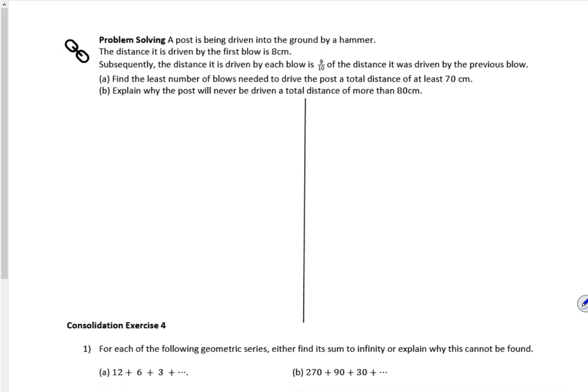So problem solving. A post is being driven into ground by a hammer. The distance it is being driven by the first blow is 8 centimeters. Subsequently the distance it is driven by each blow is 9 tenths of the distance before it. So that's a geometric progression now isn't it? So I'm working in centimeters, so A is 8 and R is 0.9.